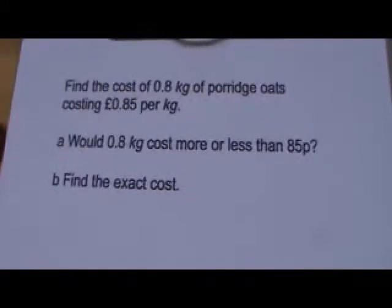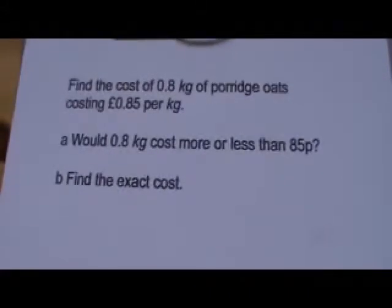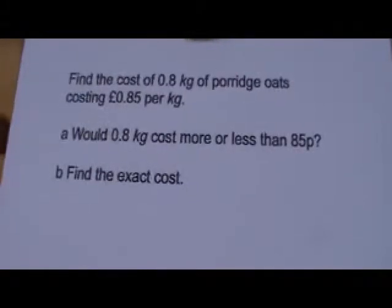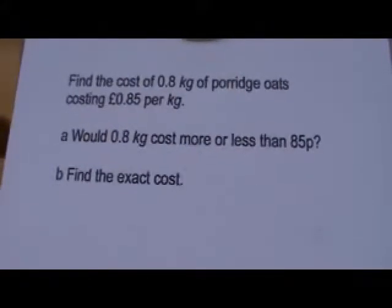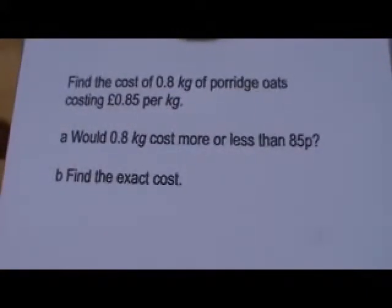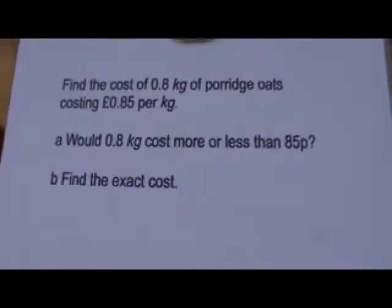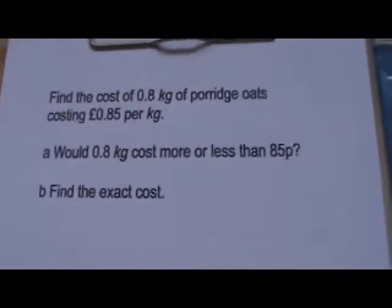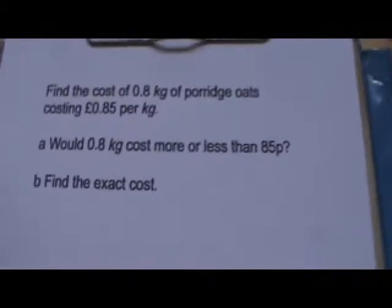Lots of people have got the misconception that when you multiply two numbers together, the answer always gets bigger. That's not true. Because 0.8 is less than 1. So we're multiplying a number, in effect, by a fraction. It's 8 tenths. It's less than 1. So the answer must be less than 85p. So the answer to A is less.